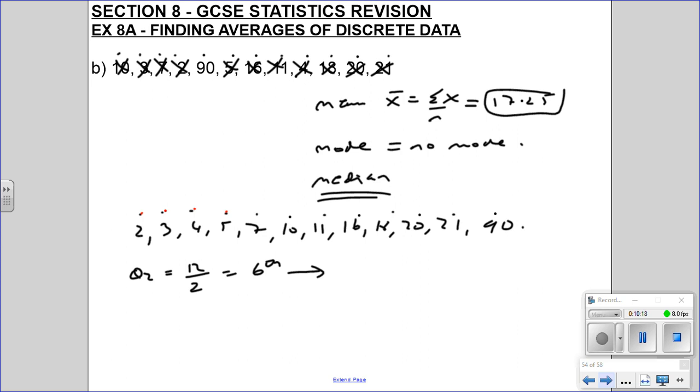So 1, 2, 3, 4, 5, 6, halfway between 10 and 11 is 10.5. And it is much lower than the mean.